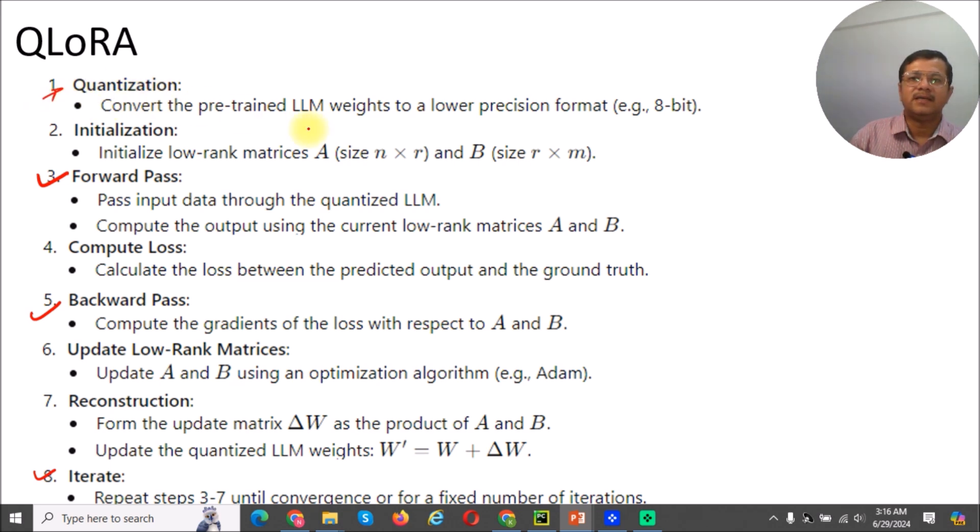So here also, first part is to quantize. So convert the pre-trained LLM weights to a lower precision format, for example, 8-bit or 16-bit kind of format. Then initialize the low-rank matrices.